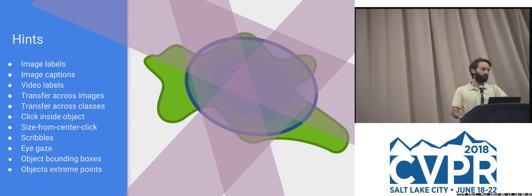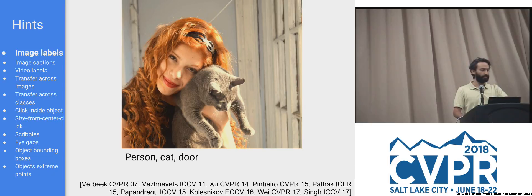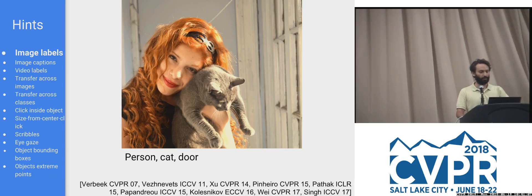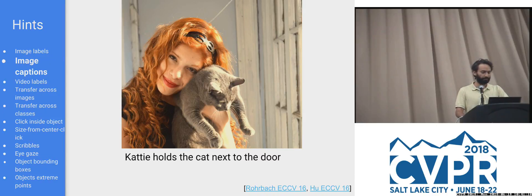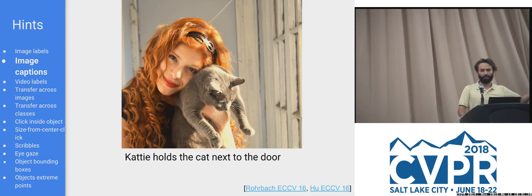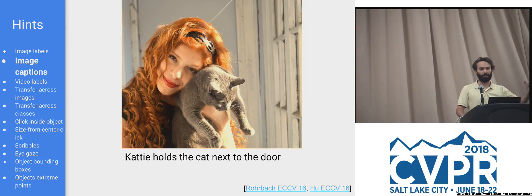Now let's talk about hints. The literature explores many different ways to provide a hint about the subject of interest or extent of the object. The most vanilla one is an image-level label — just knowing that one image contains a person and another doesn't provides information about the appearance of that object. A bolder approach is having a caption describing the scene: knowing that 'Katie is a person who holds a cat next to another subject' lets you leverage that. This work has been done on grounding from text to boxes, and if you have boxes you can go from boxes to segments.